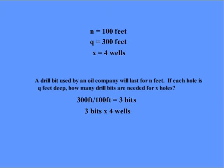So now let's just substitute the letters back in for the numbers. q goes where 300 feet is, n goes where the 100 feet is, and you multiply that by x. So that's going to give us qx over n. Put numbers in there so you can make these things make sense.